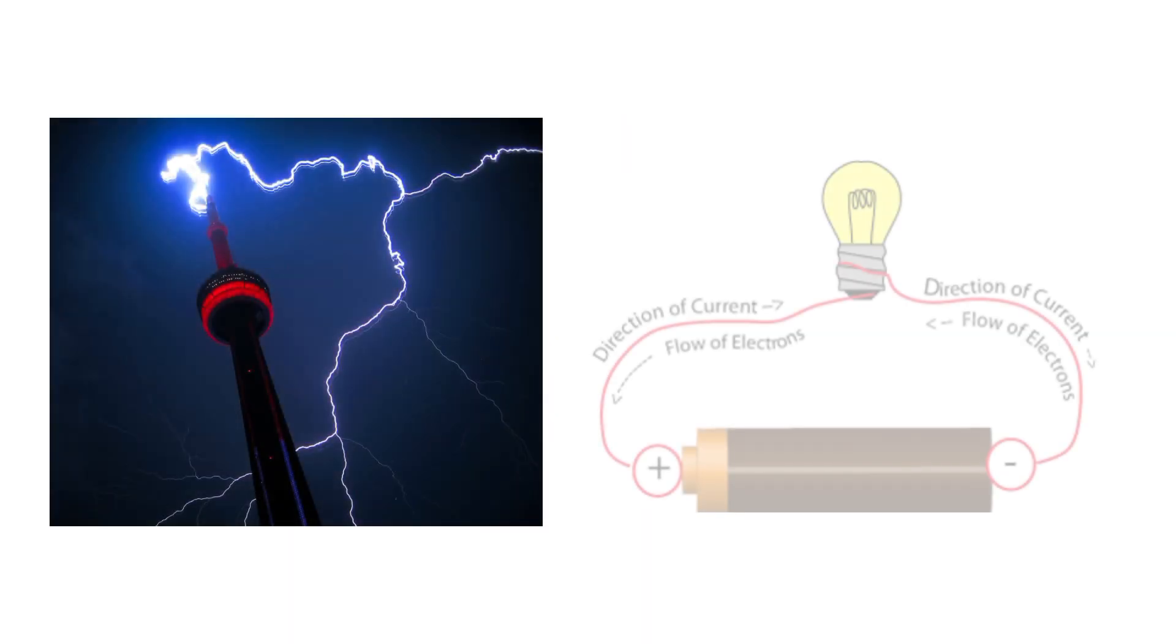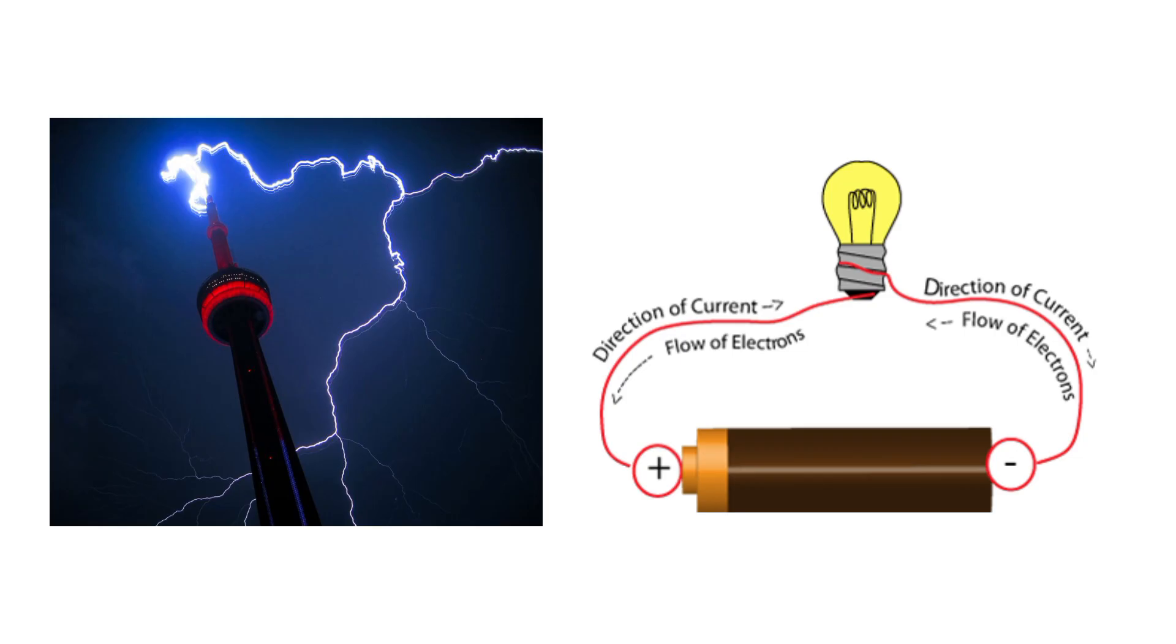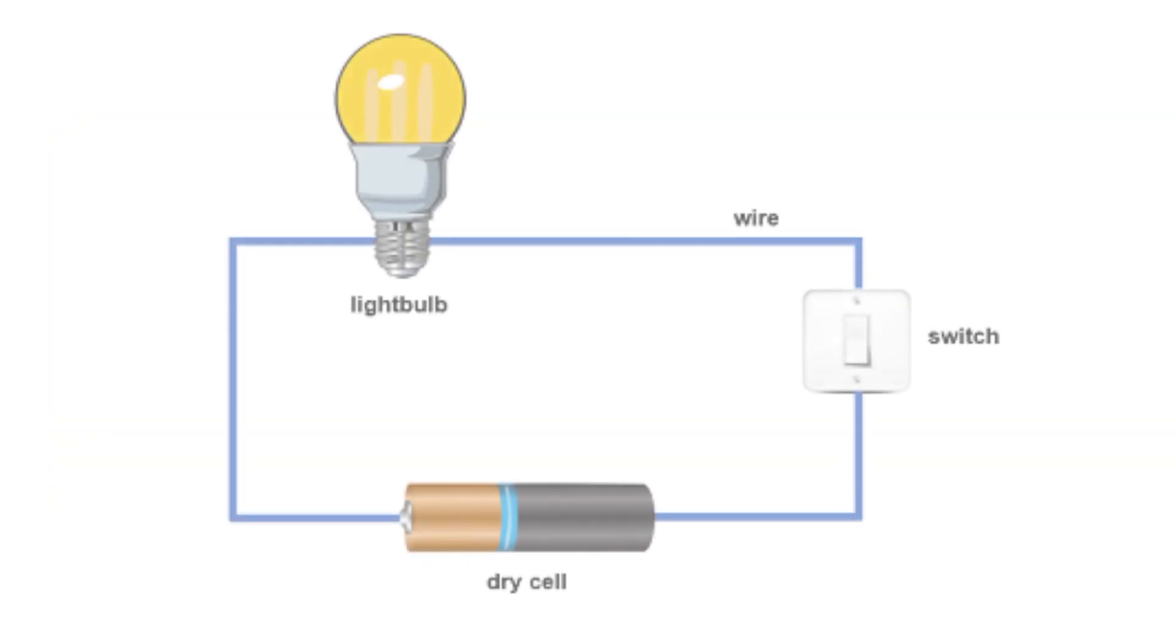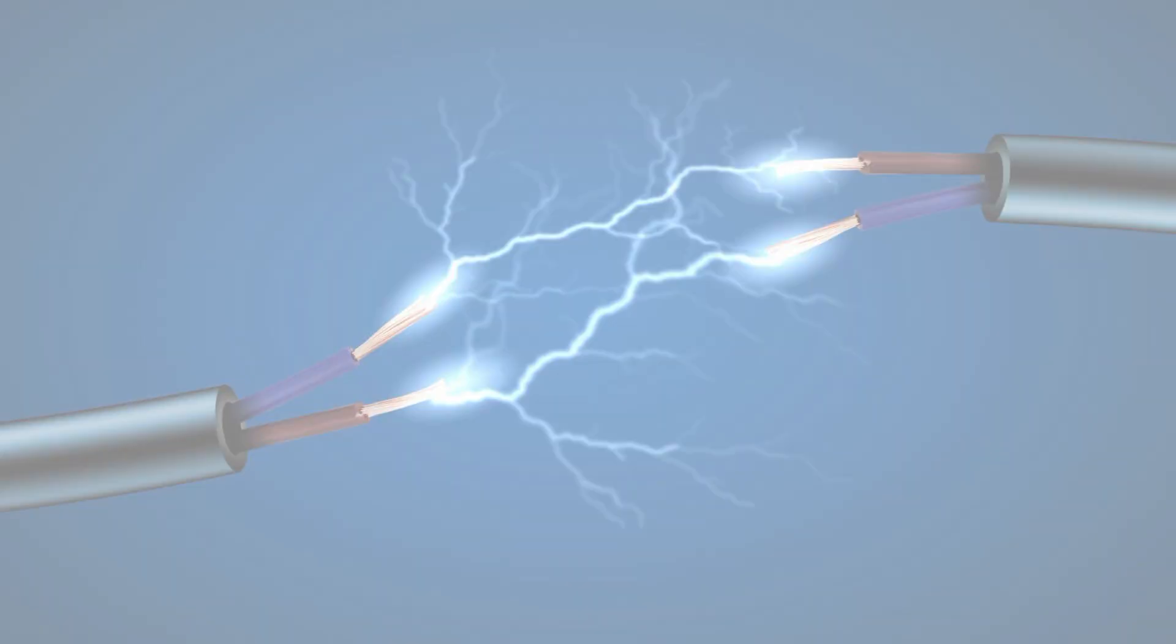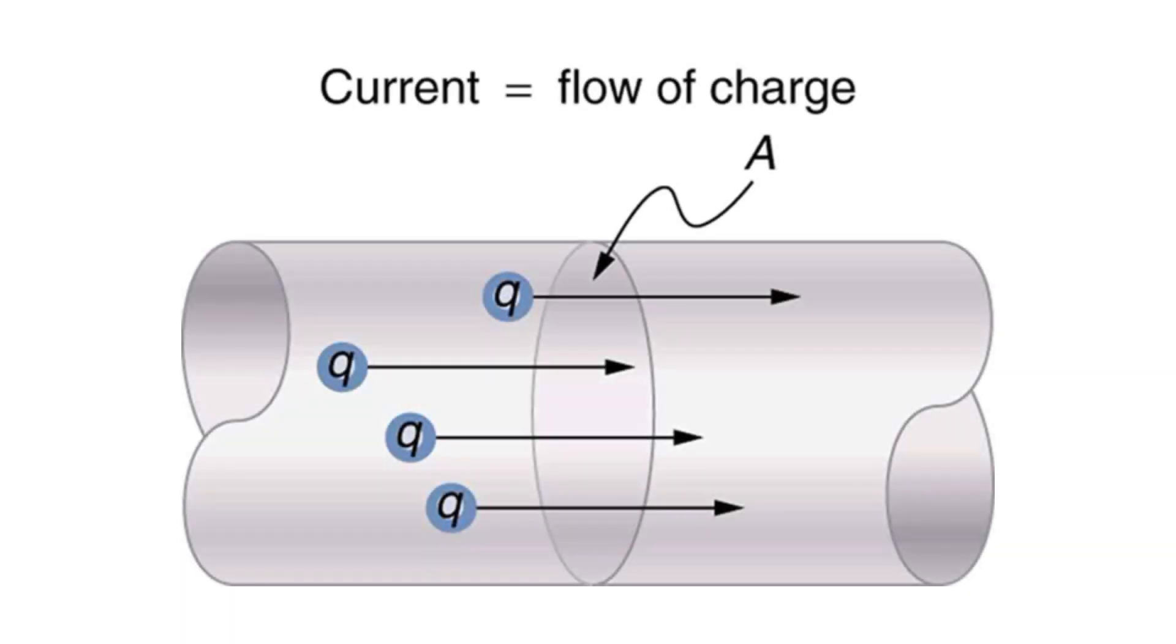If you want to distinguish voltage and current, voltage measures the potential difference between two points in a circuit, but current measures the flow of electric charge or the flow of electrons through a circuit.